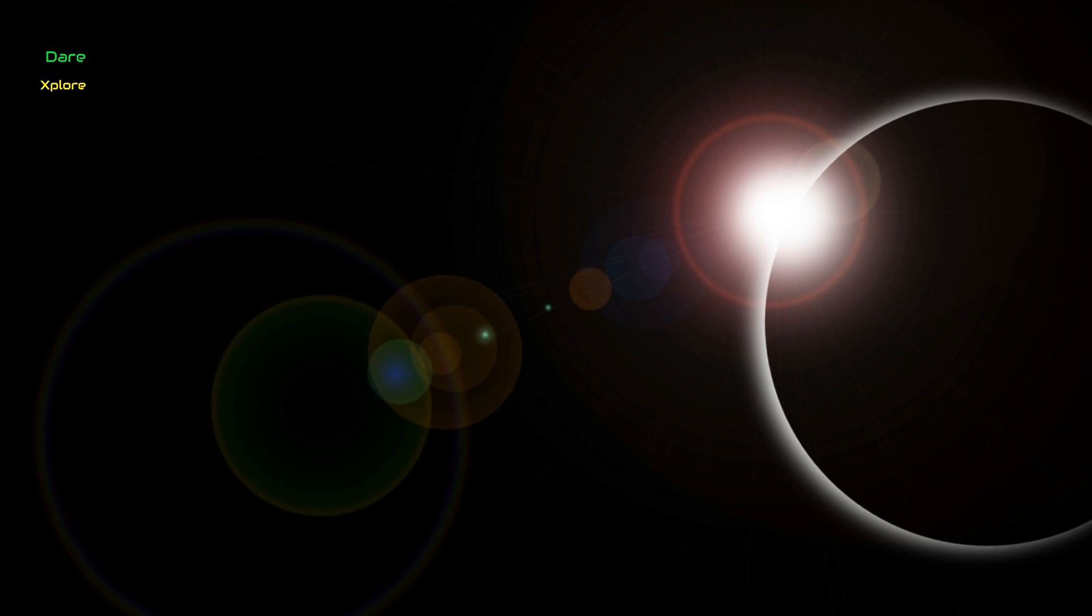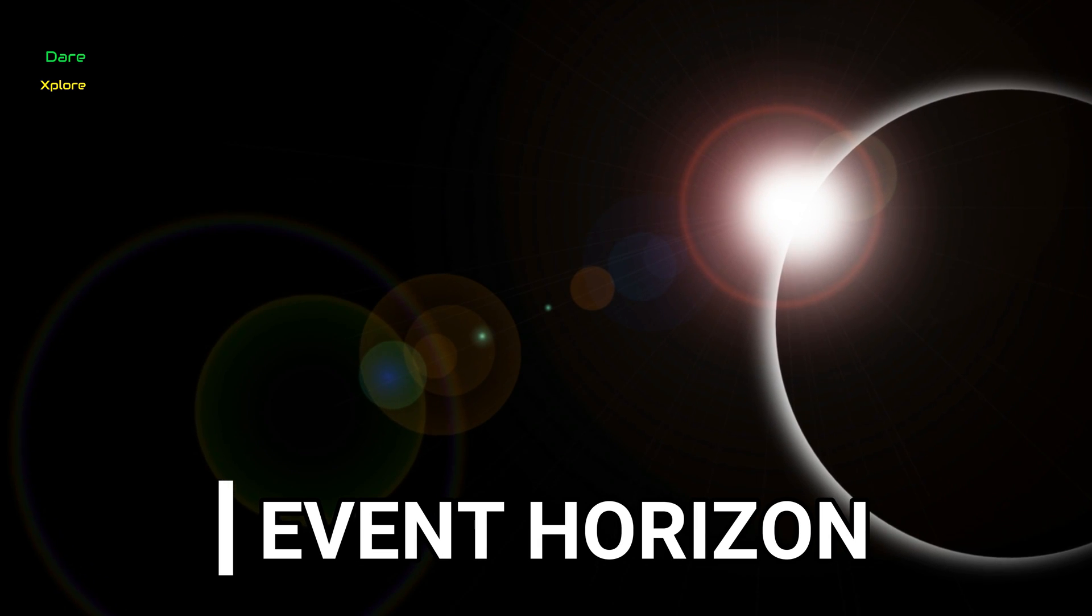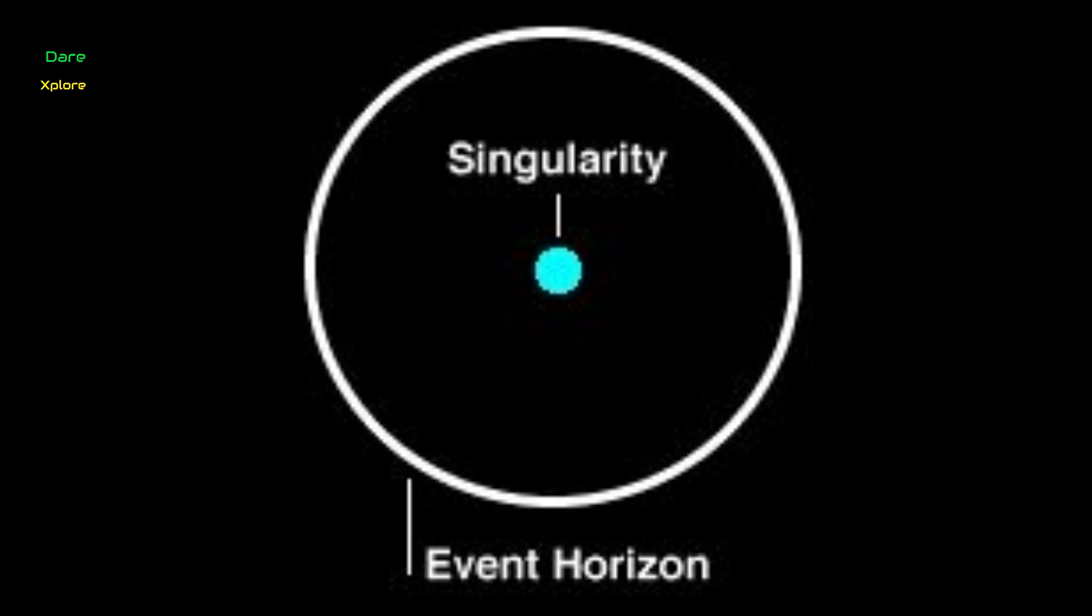In many ways a black hole acts like an ideal black body as it reflects no light. The event horizon of a black hole is the boundary where matter and light can only pass inward towards the mass of the black hole.